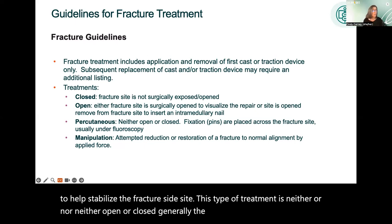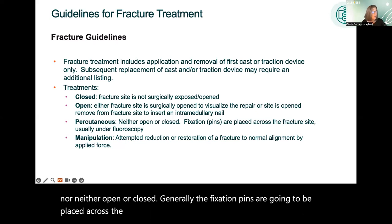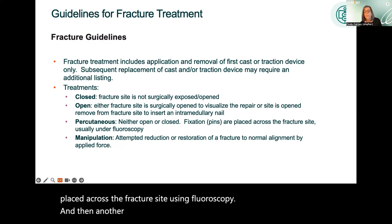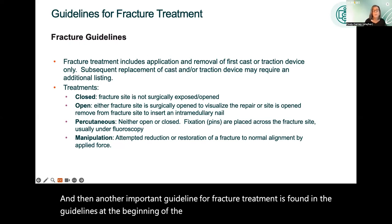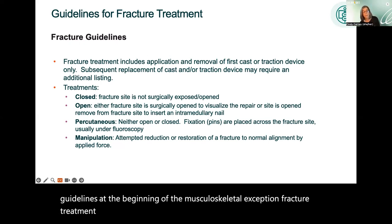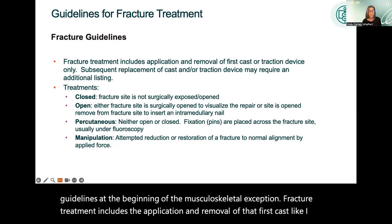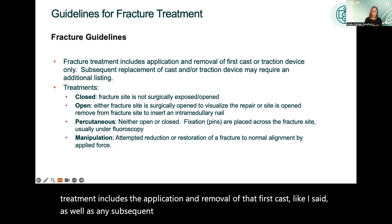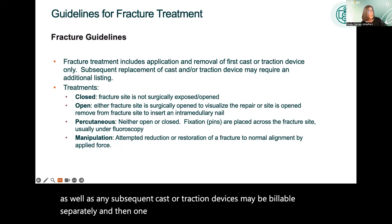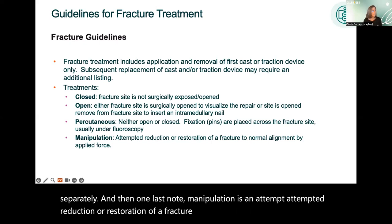Generally, the fixation pins are placed across the fracture site using fluoroscopy. Another important guideline for fracture treatment is found at the beginning of the musculoskeletal section. Fracture treatment includes the application and removal of the first cast, and any subsequent cast or traction devices may be billable separately. Manipulation is an attempted reduction or restoration of a fracture to normal alignment by applied force.